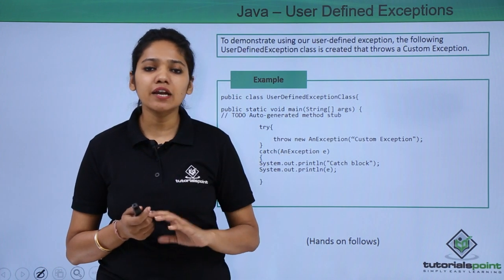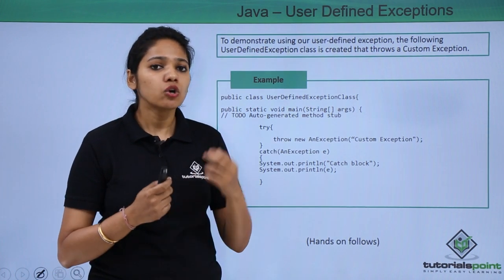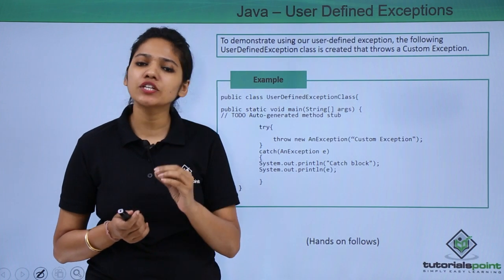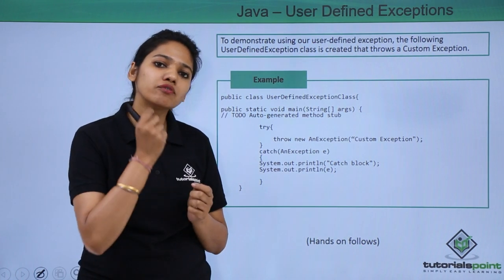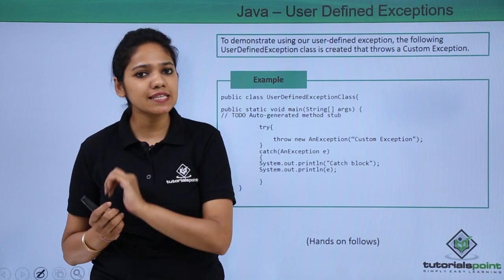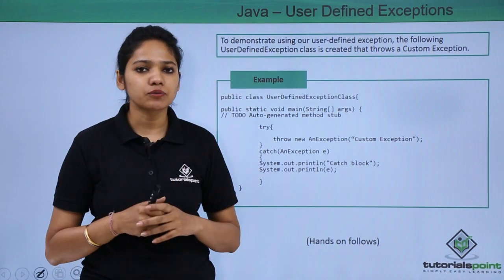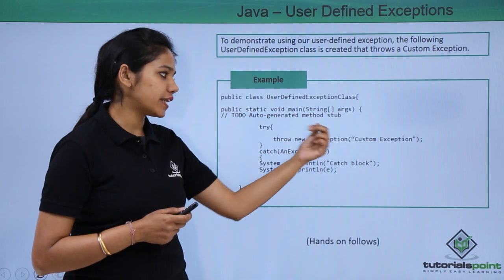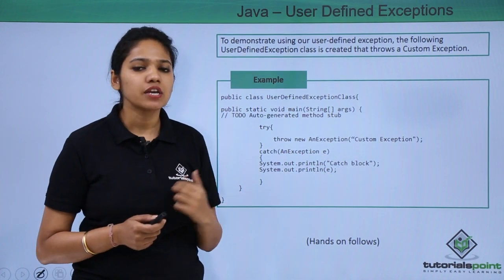By all these videos, we have learned what an exception is, what an error is, what kinds of exceptions we have, and if you want to define your own exception — how to define it, who will handle it, and who will throw it. Exceptions are abnormal situations or events that may occur when you run your program. You handle them using try, catch, and finally blocks. Finally, we will execute this program practically to understand user-defined exceptions — how the exception class is created, how it throws the error, and how it prints the customized exception.